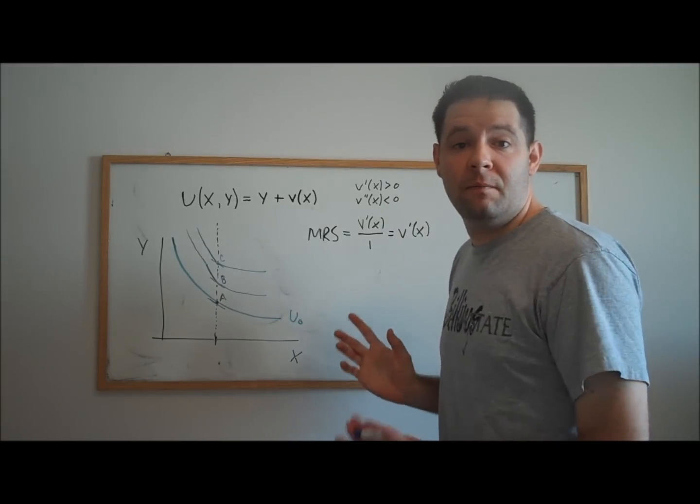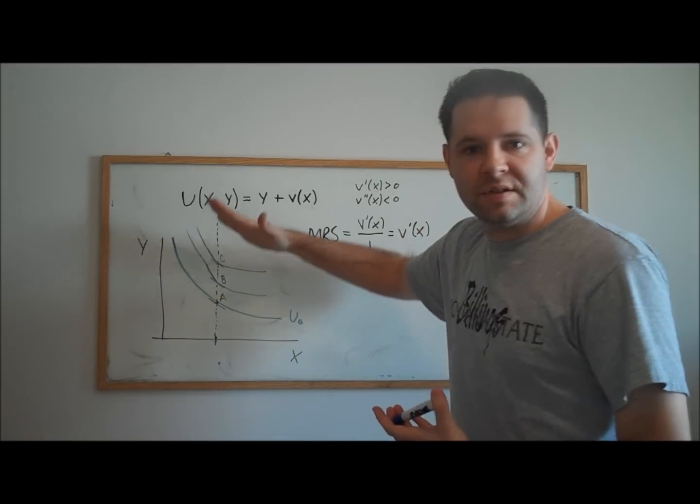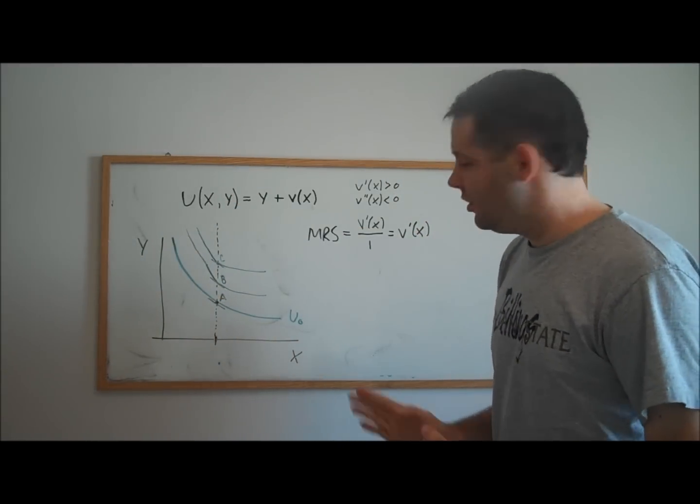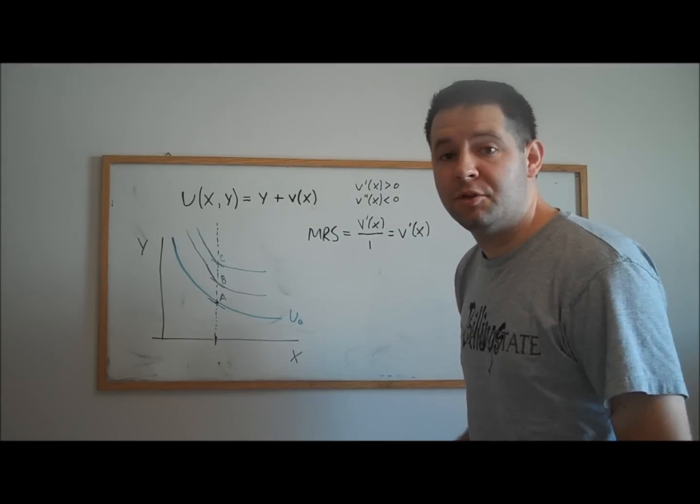So this is a very particular utility function. It has this property of parallel shifts of the indifference curves. And the marginal rate of substitution only depends on how much x does this consumer have in his consumption bundle.